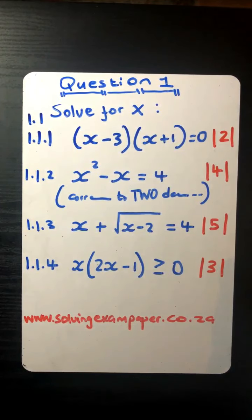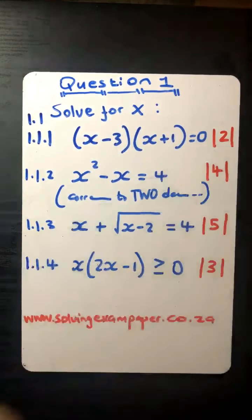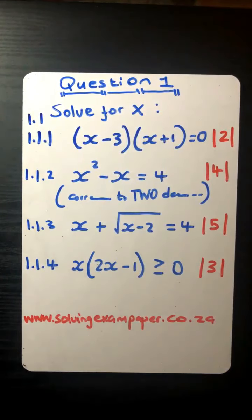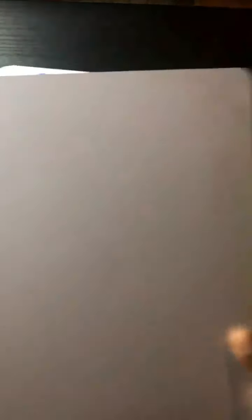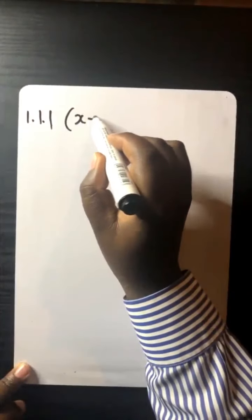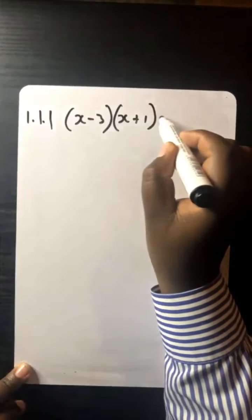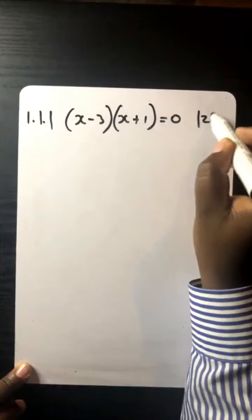I see we've got a new participant — welcome, Neilin, to my lessons. It's unfortunate you joined at a stage where we've already done the basics, so now what we do is solve exam-type problems. I'm going to quickly write down the first question, which is 1.1.1: (x minus 3)(x plus 1) equals zero, and that question is allocated two marks.